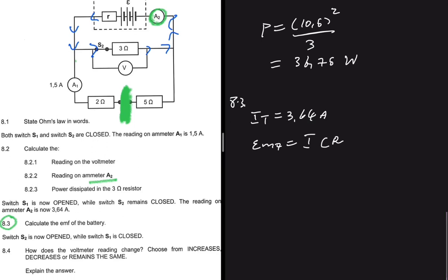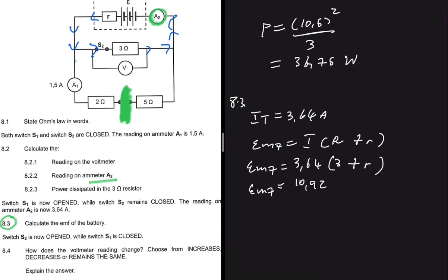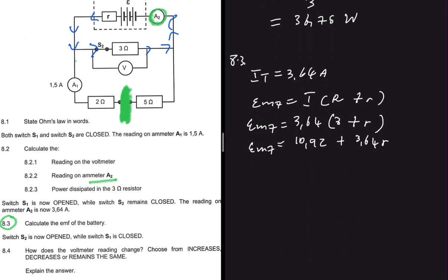To find the EMF, we use: EMF = I × R_external + I × r (internal resistance). So EMF = 3.64 × 3 + 3.64r = 10.92 + 3.64r. As you can see, we're looking for the EMF but don't have the internal resistance, so we have one equation with two unknowns. We'll call this Equation 1 and find another equation to solve simultaneously.